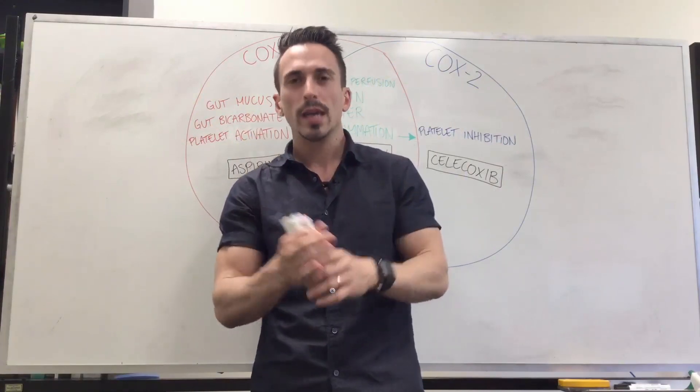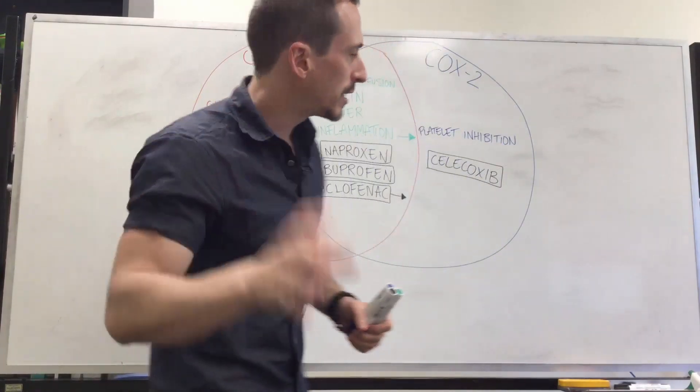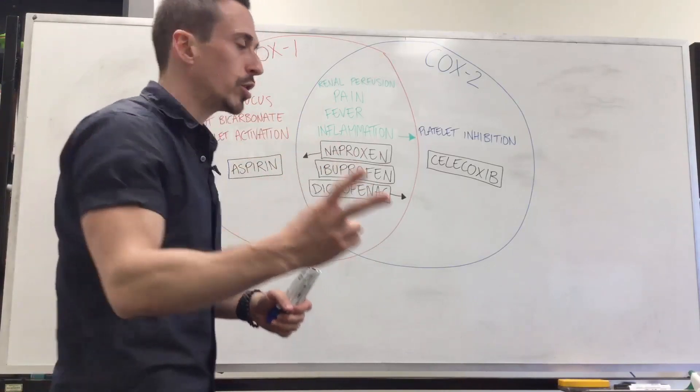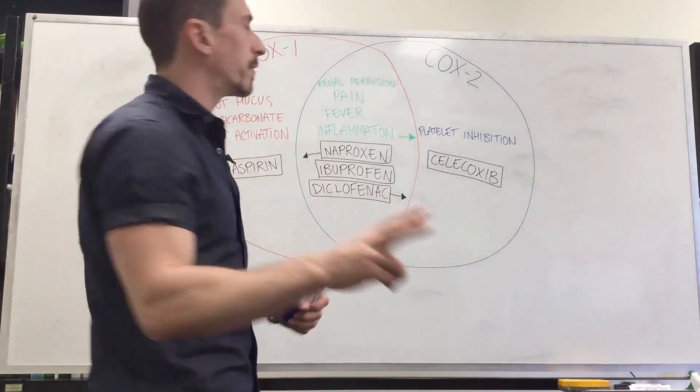The way that these drugs work is that they inhibit a specific type of enzyme called cyclooxygenase enzyme. There's two types - actually more than two, but we're only going to focus on two.